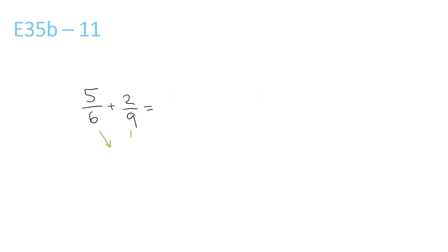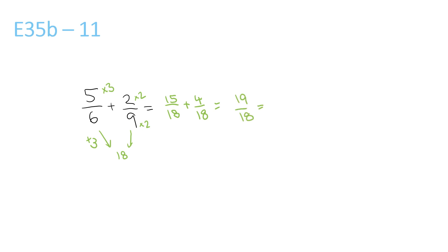6 and 9, the lowest common multiple that they both go into is 18. 6 times 3 is 18, so we have to times the top by 3. 5 times 3 is 15 over 18. Plus 9 times 2 is 18, so we times the top by 2 to get 4 over 18. Now since both of the bottom numbers are the same, we can add the top ones to get 19 over 18. 18 goes into 19 once, remainder 1 over 18.